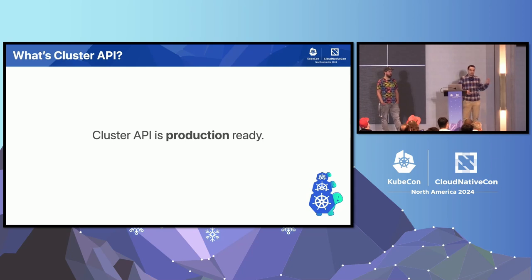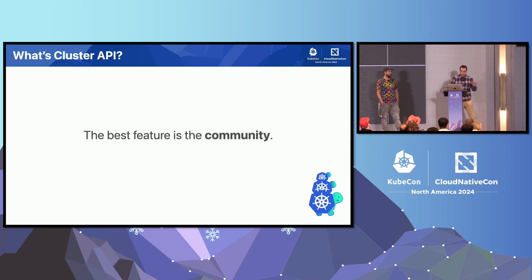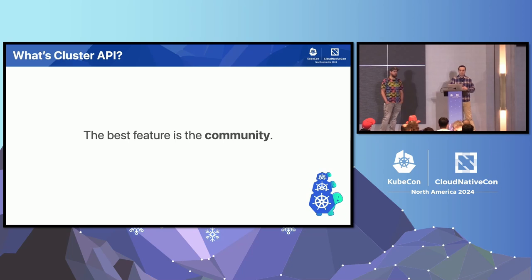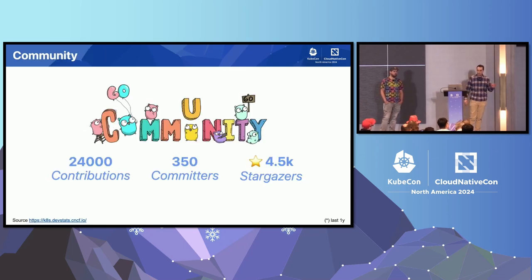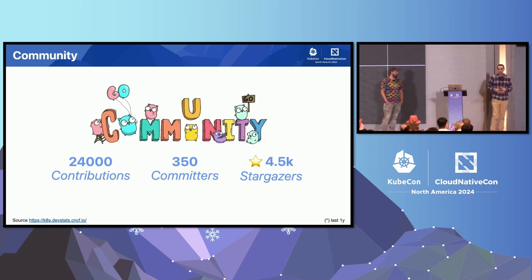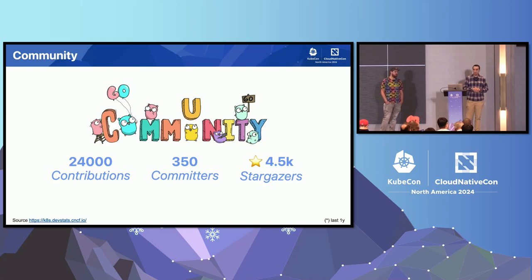It is production-ready. There is a blog post put together a few years ago when we went to production, and many companies shared their use cases. Our best feature is the community — this product wouldn't be here without all of you giving feedback and contributing in any shape or form. Just in the last year, we've had almost 24,000 contributions including commits, comments, and PR reviews. There are 350 active committers, and across all Cluster API repositories we have reached almost 5,000 stars.